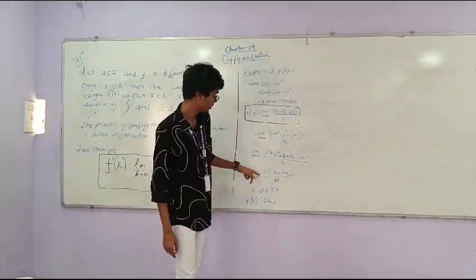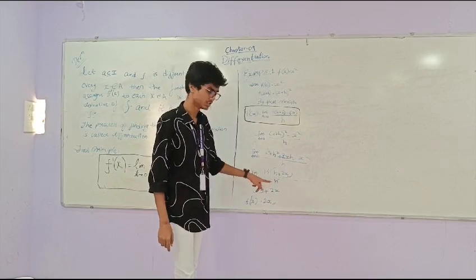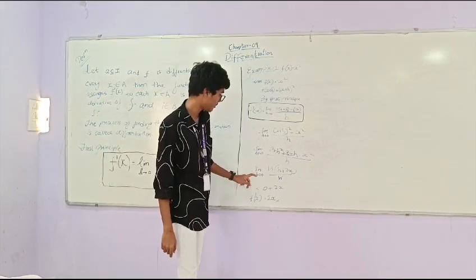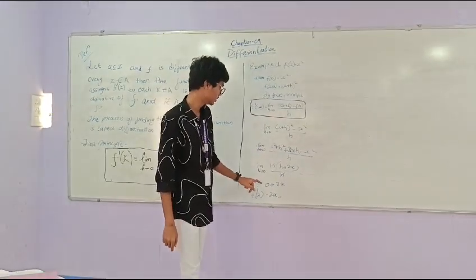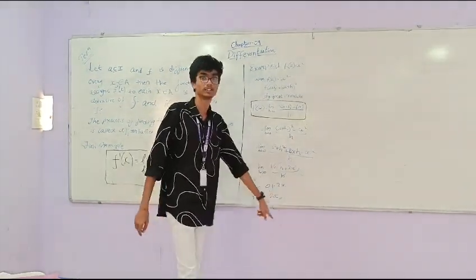Therefore limit h tends to zero, take h as common, h into h plus 2x by h. Now h cancels. Apply limit, that is equal to h becomes zero plus 2x. Therefore f dash of x equal to 2x.